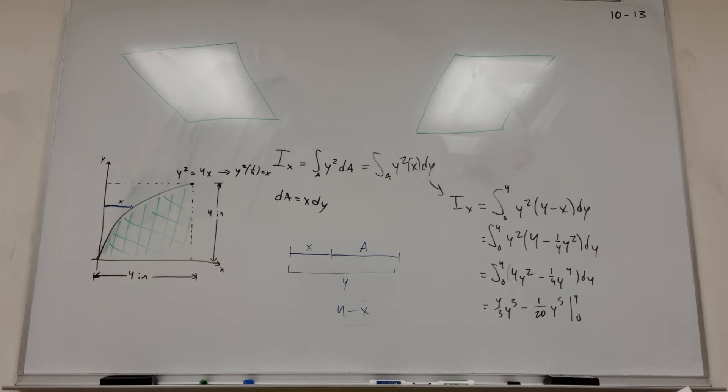Make sure I plug that in right. Yep. So you're going to plug in 4 for each of these, and if you plug in 0 you're going to get nothing. And so you're going to find that your final answer, Ix, is equal to 34.3 inches to the 4th.